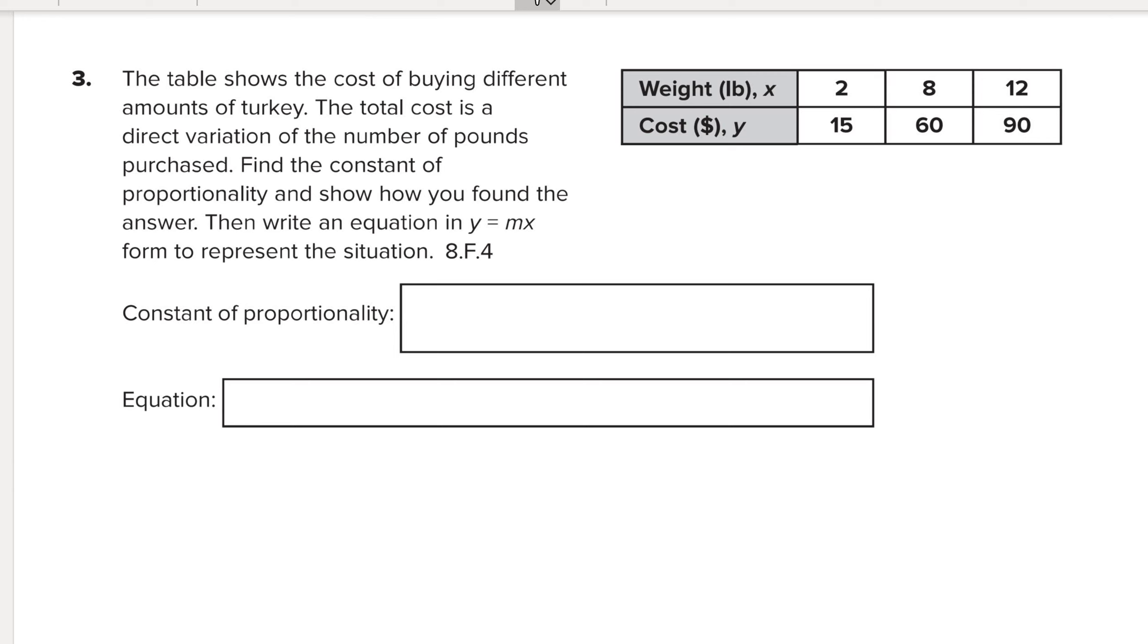So if we're looking at this table, we can look to see if I'm working, I'm going to make my table go sideways with the x and then the y. So I have 2 and I have 15. I have 8 and I have 60. And I have 12 and I have 90.